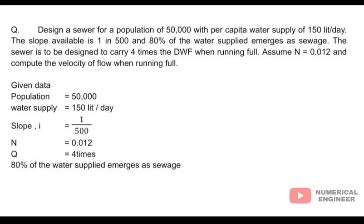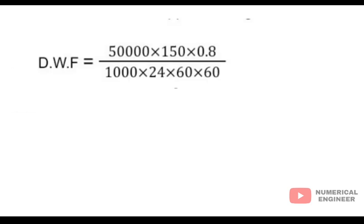Now we write up the given details: the population, the water supply, slope, n, and the remaining things. Now we are calculating the DWF, dry weather flow.